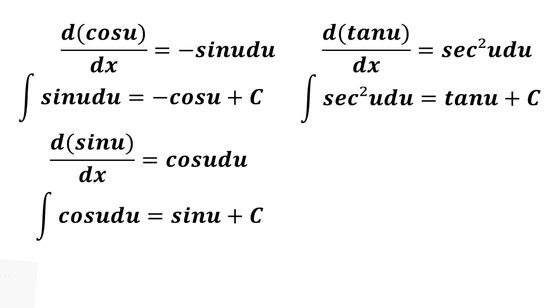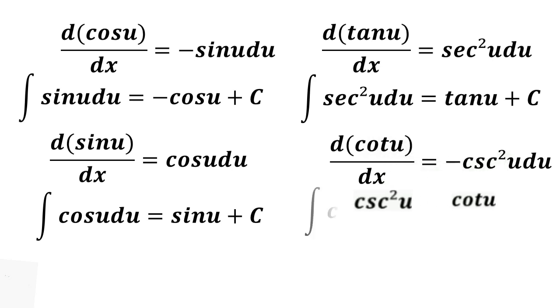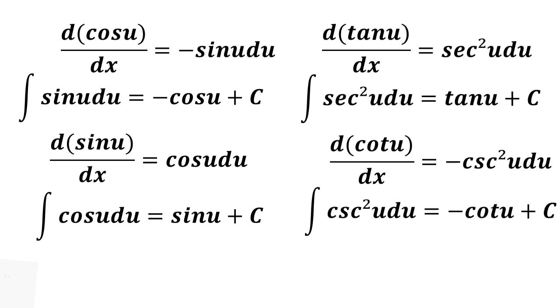The derivative of cotangent u is equal to negative cosecant squared u du. In reverse, the integral of cosecant squared u du is equal to negative cotangent u plus c.